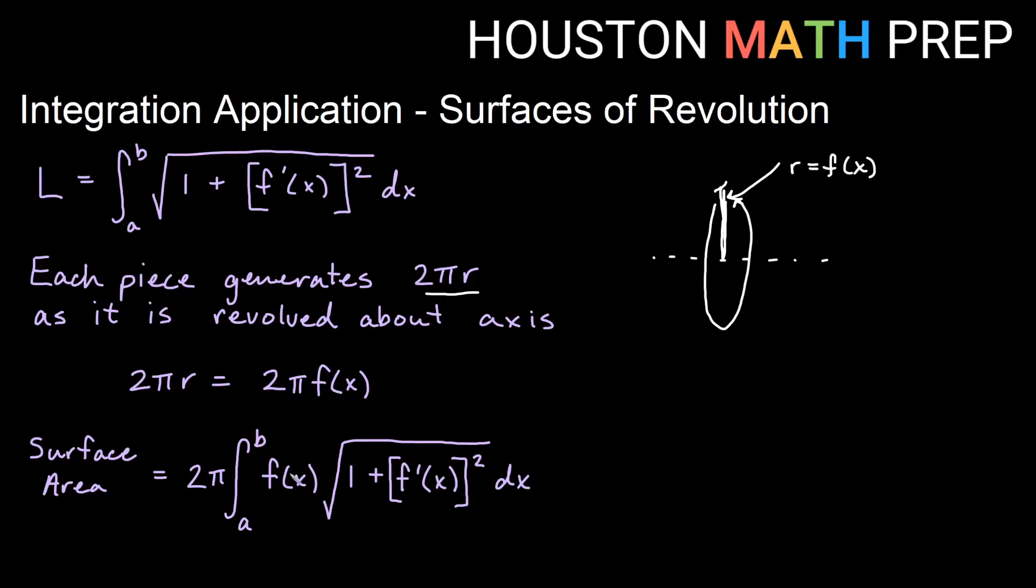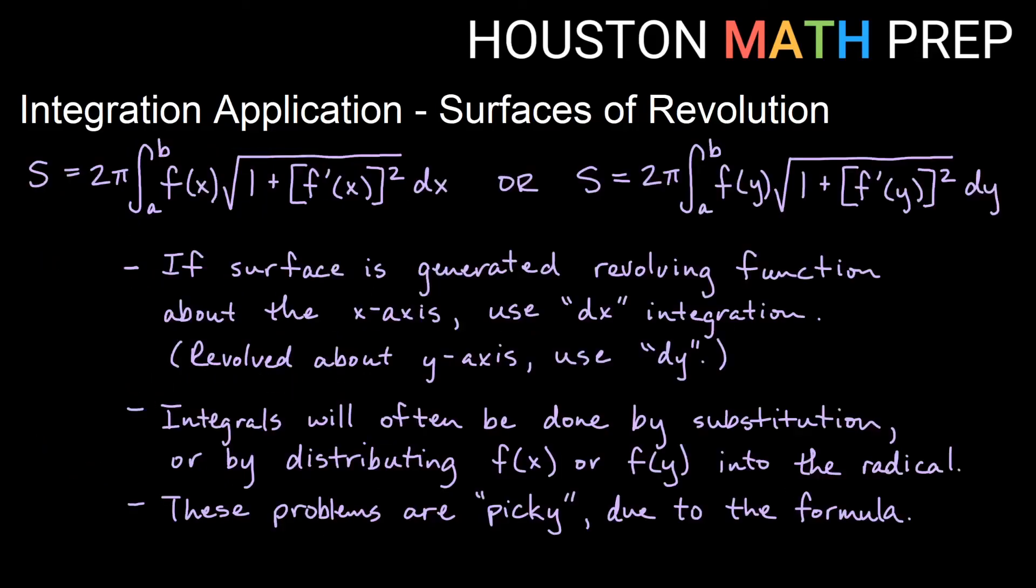2π is a constant, so we can bump out 2π. So while this may only be about 99% accurate as far as how to think of this formula, I think it's much more intuitive to see this 2πr as circumference times how we've already been doing arc length in terms of the integral formula. So this will be our formula for surface area that we're going to use.